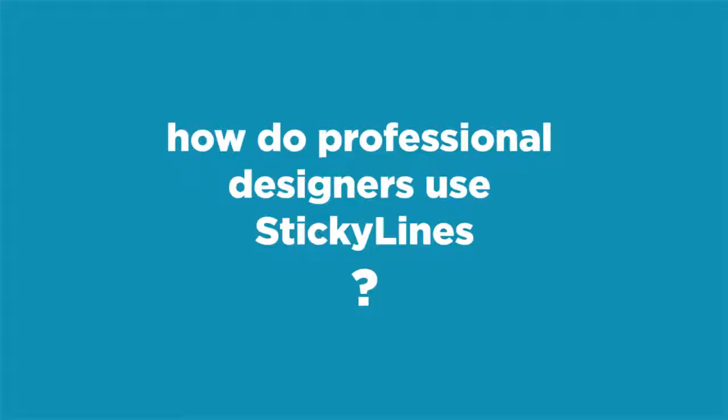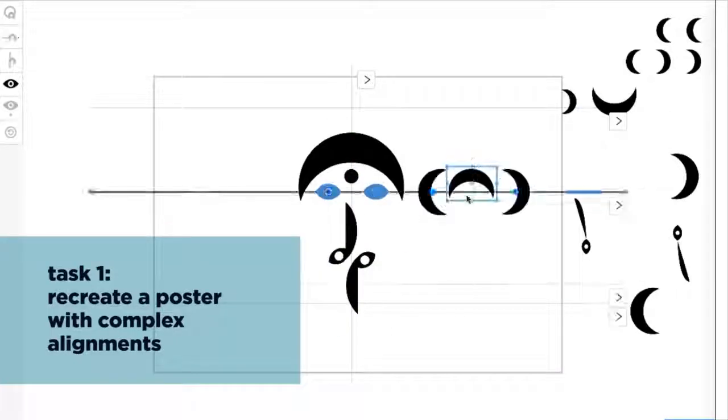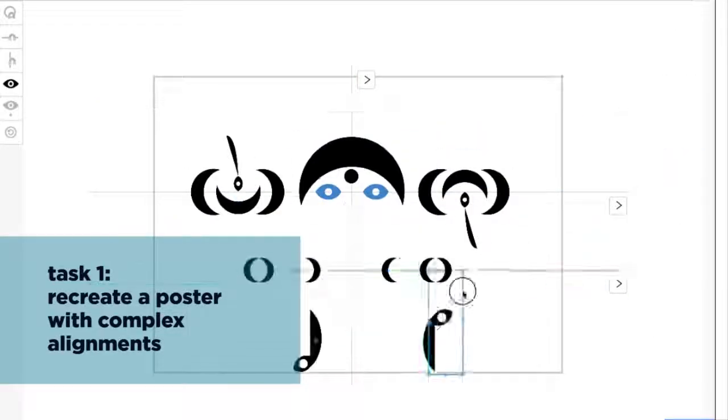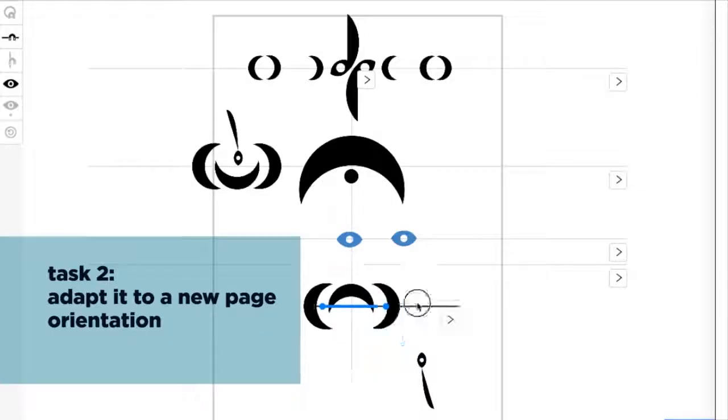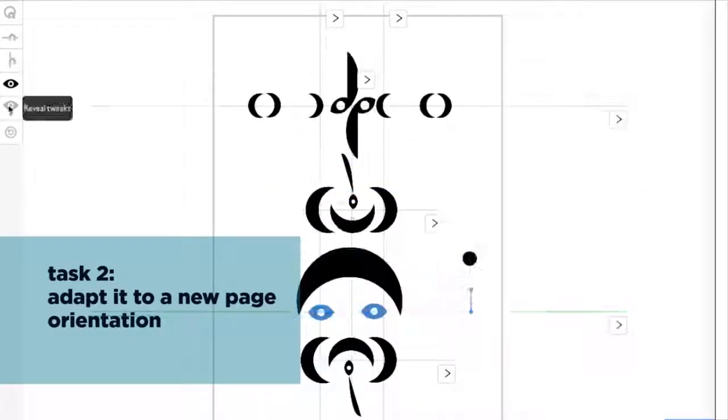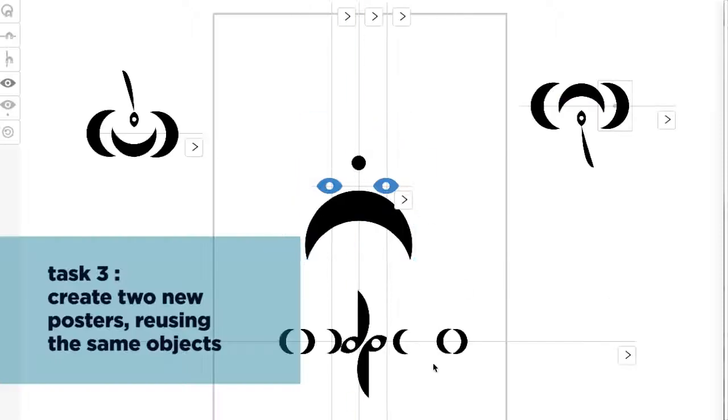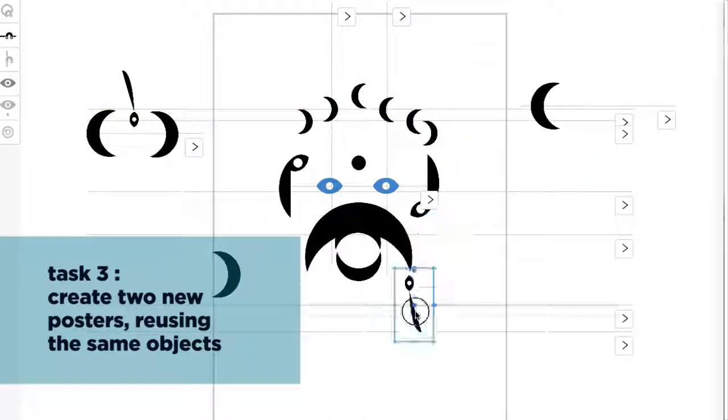Finally, we observed designers as they used sticky lines to create complex layouts. We asked them to recreate a poster with complex and ambiguous alignments. They then had to adapt it to a new page orientation. Finally, they had to create two variants based on the same objects.